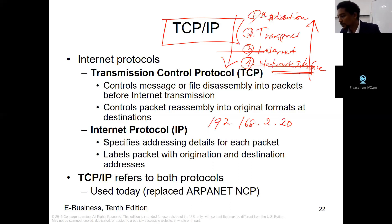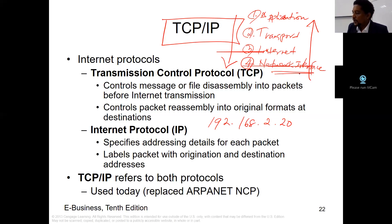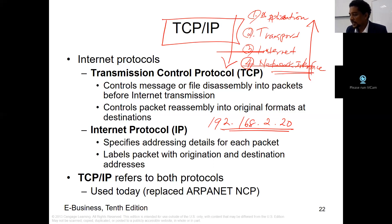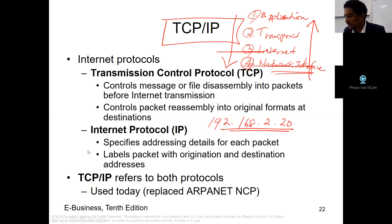Files will be disassembled into packets and sent for transmission. Internet Protocol specifies addressing details for each packet and labels the packet with origination and destination addresses. TCP/IP refers to both protocols and replaces the old Network Control Protocol used by ARPANET. Now we use TCP/IP protocol. There are two types of IP protocols: version 4 and version 6.